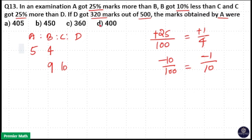Same way C got 25% more than D. So 25% more means 25 by 100, that is 1 by 4, plus 1 by 4. That is if D get 4 marks, C will get 4 plus 1, 5 marks.